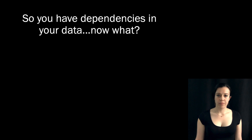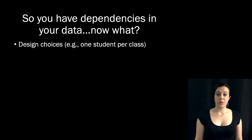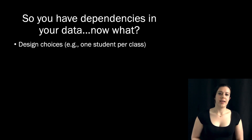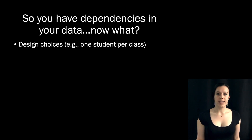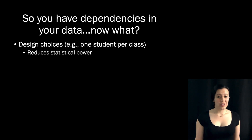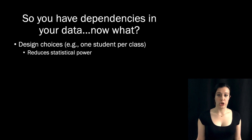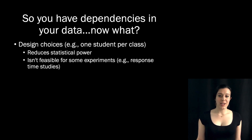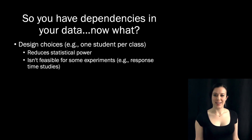So what do we do? Well, one option has to do with design choices. You could, in theory, design all of your studies so that you only have one student per class, or in a different study where each person provides multiple responses, you could just get one observation per participant. But that reduces statistical power. If you have the option of collecting data from multiple students in a class, then you should. Also, this option just isn't feasible in some experimental contexts.